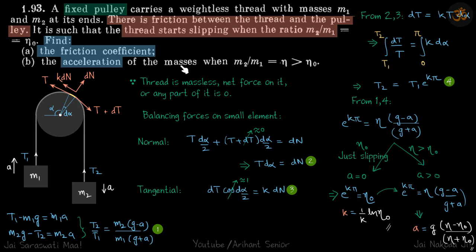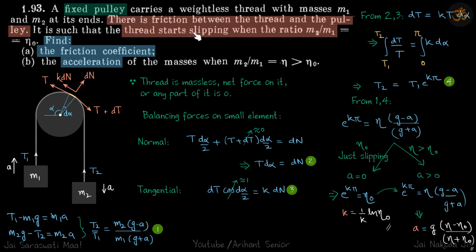When m2 by m1 is greater than eta naught, we need to find the acceleration of the masses. Initially when it just starts slipping, the acceleration must be zero — that's how we will approach the problem. Because there is friction, the tension on both sides of the thread is going to be different. Let's say on the left side it is t1 and on the right side it is t2. So we can write: t1 minus m1g equals m1a, and m2g minus t2 equals m2a. From here we get the ratio of t2 to t1.